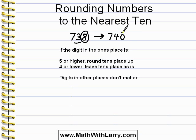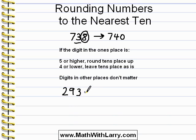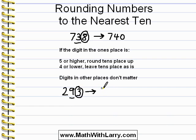It becomes an easier number to work with if we're adding or subtracting, and it'll help us get a general idea of what our answer will be. Let's take a look at another example: the number 293. According to our rule, the digits in all the other places don't matter. We're going to be rounding to the nearest 10 and taking a look at the digit in the ones place. Since that digit is 4 or lower, we're just going to leave the tens place as is, and the number becomes 290.